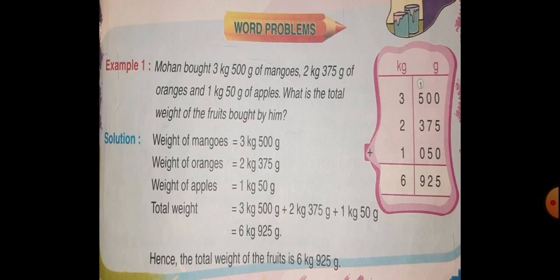Total weight is equal to 3 kg 500 g and 2 kg 375 g and 1 kg 50 g. For 50 g, you will write 050 g and after addition, you will get 6 kg 925 g. Hence, the total weight of all the fruits is equal to 6 kg 925 g.